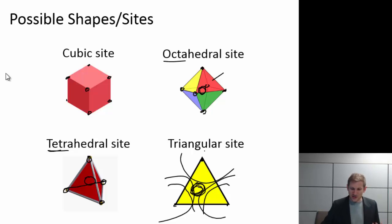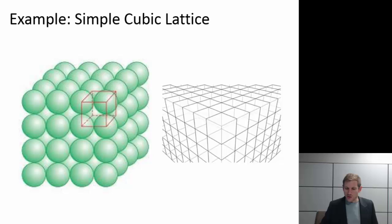Okay, so those were our potential sites. Let's think about what kind of sites exist in different lattices. And so we're going to start off with a fairly straightforward example, the simple cubic lattice.